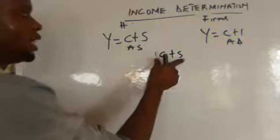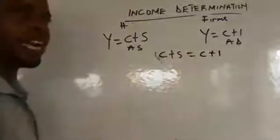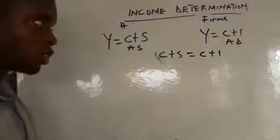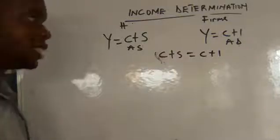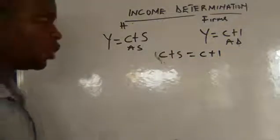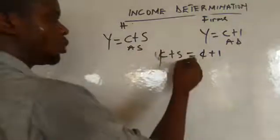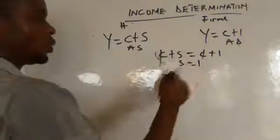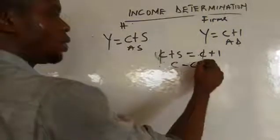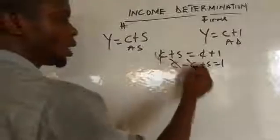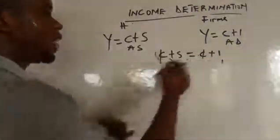We can write C plus S equals C plus I, since income revolves between firms and households — refer to the circular flow of income in a two-sector model. The consumption cancels out on both sides, giving us S equals I. This is the equilibrium condition: savings equals investment, meaning the supply of money by the household equals the demand for money by the firms.